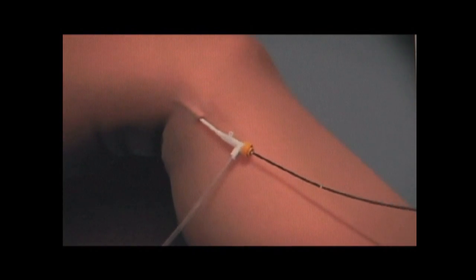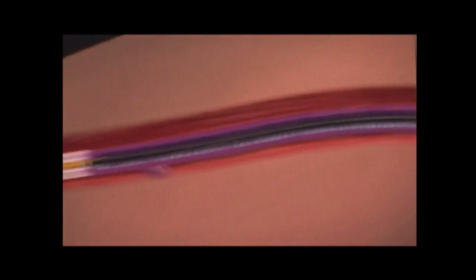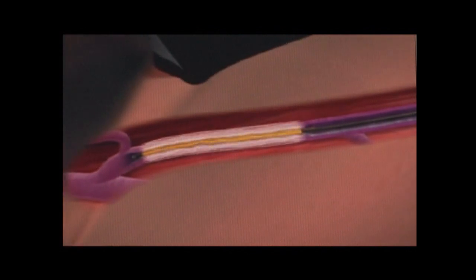The catheter is inserted through a sheath which has been placed at the level of the knee. The catheter is then advanced through the saphenous vein to the level of the junction of the saphenous vein and the common femoral vein.